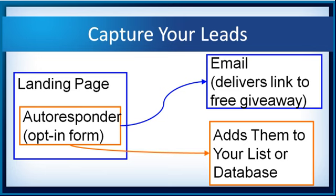It could send a link to a separate page that you have uploaded to your web host, or a page on your blog that is not accessible any other way. You could also deliver that page link via the email. But right now I want to show you how to deliver the actual download link for the PDF file via your autoresponder.